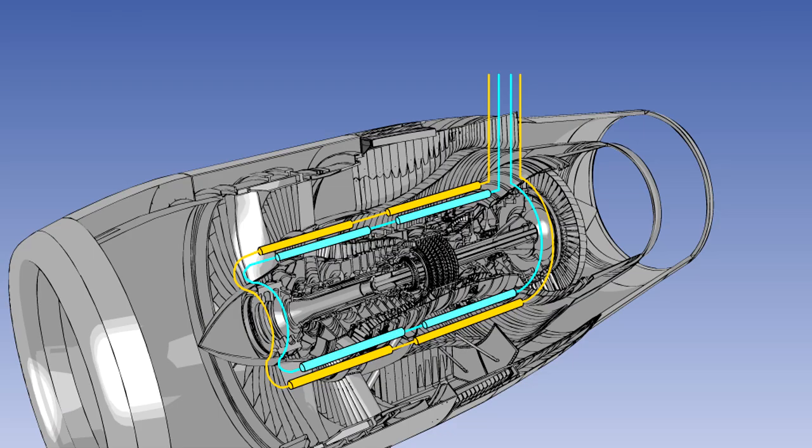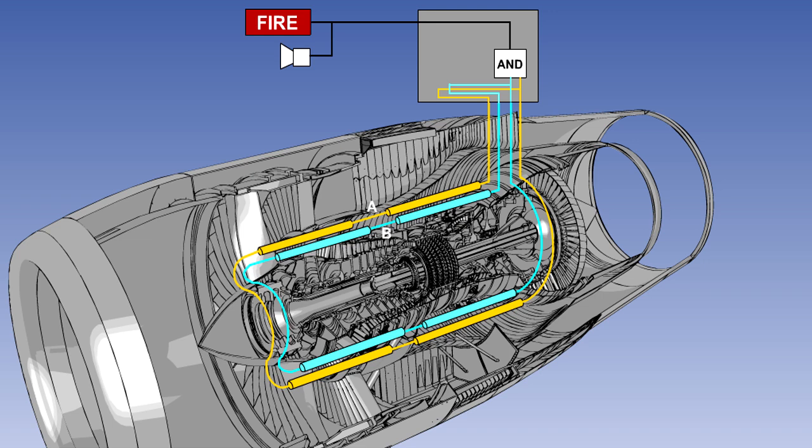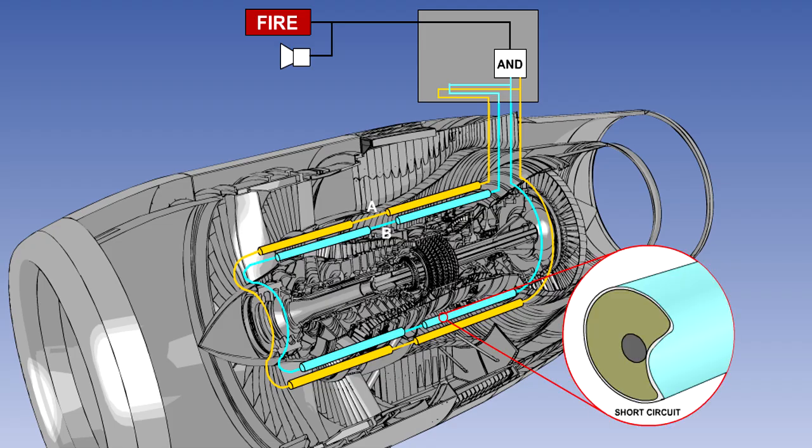Fire wires are positioned around engine fire zones in a continuous double loop. The two loops are normally known as loop A and loop B. The two loops operate independently. Both loops need to detect a fire to initiate the warning. In this way, spurious warnings caused by one loop giving a false fire indication, possibly due to a short circuit, are prevented. Warning of any loop failure may be displayed on the fire detection panel or electronic system display unit.